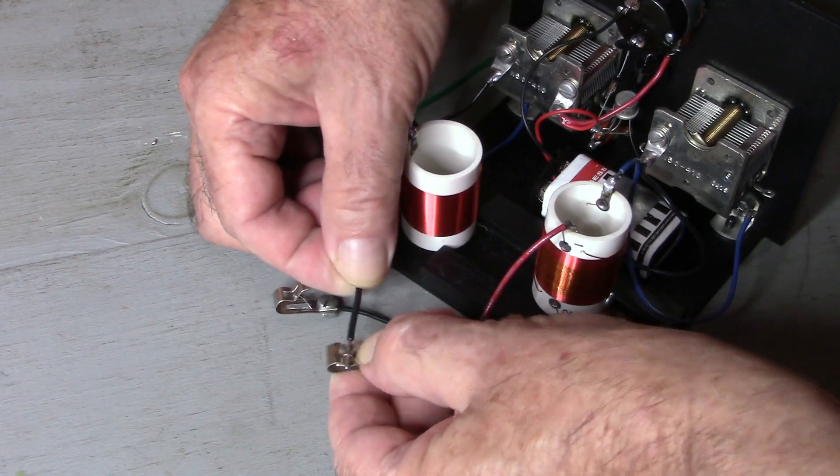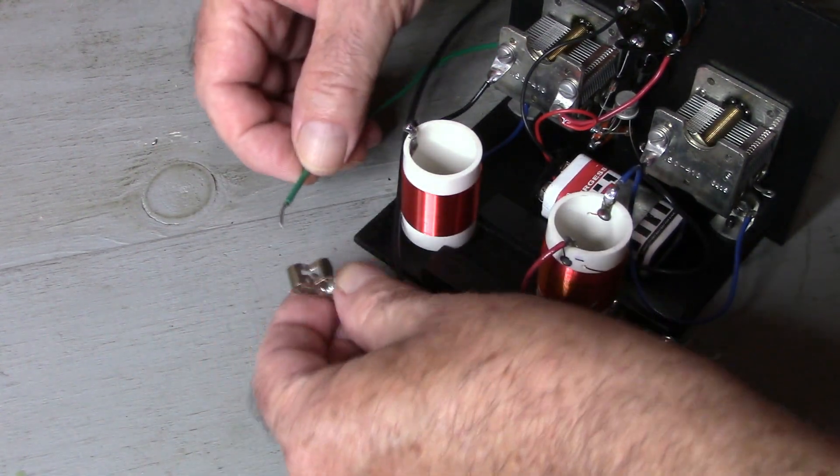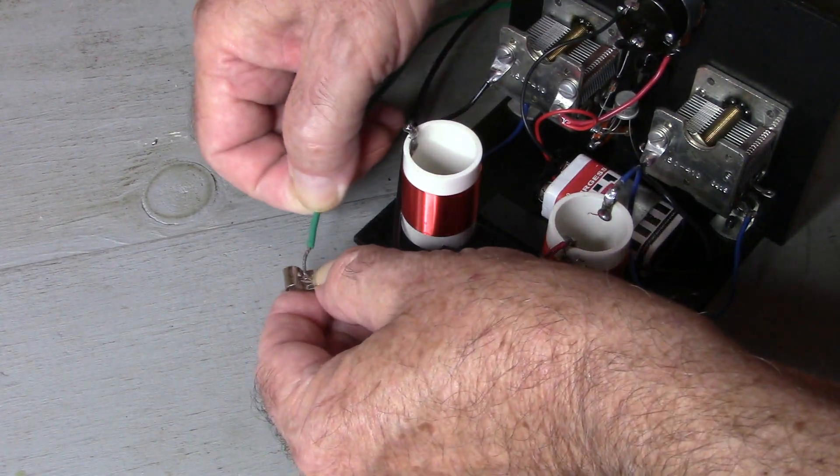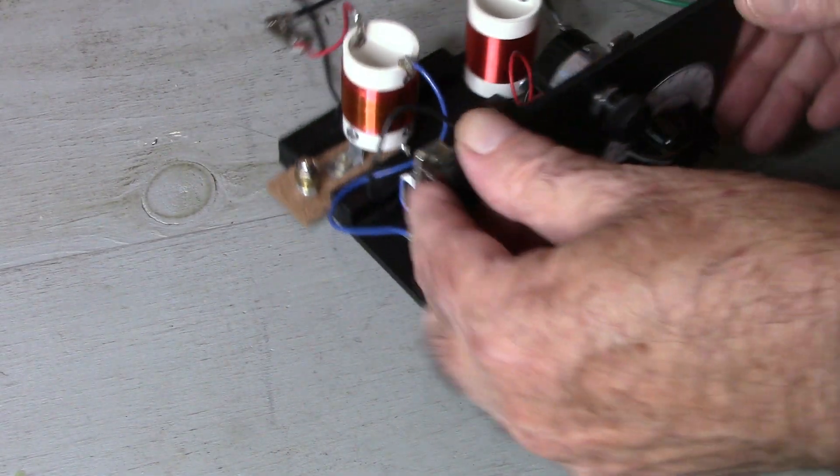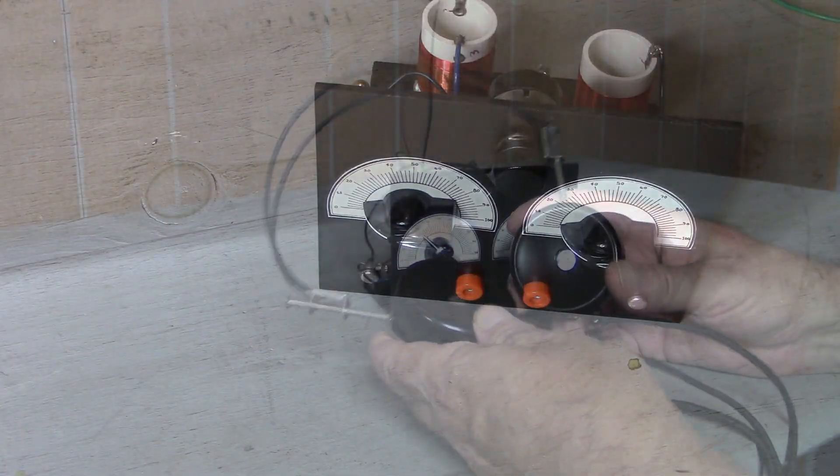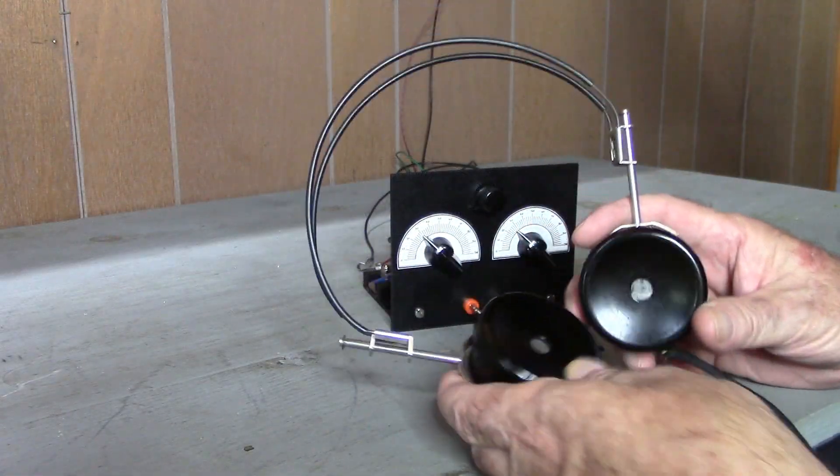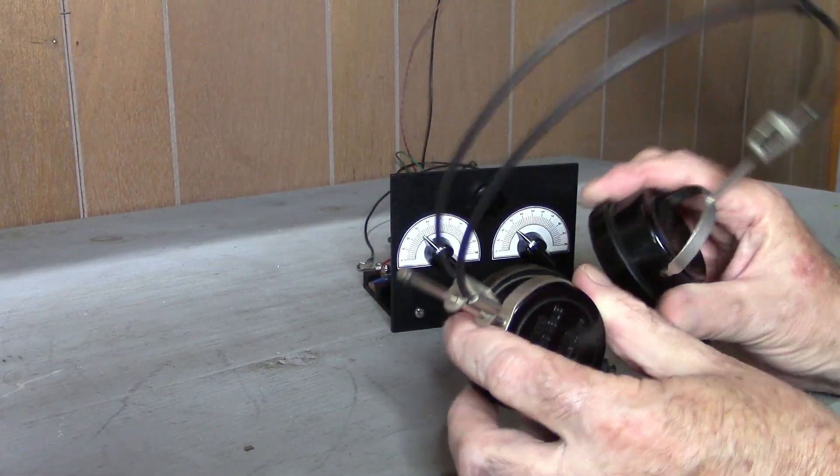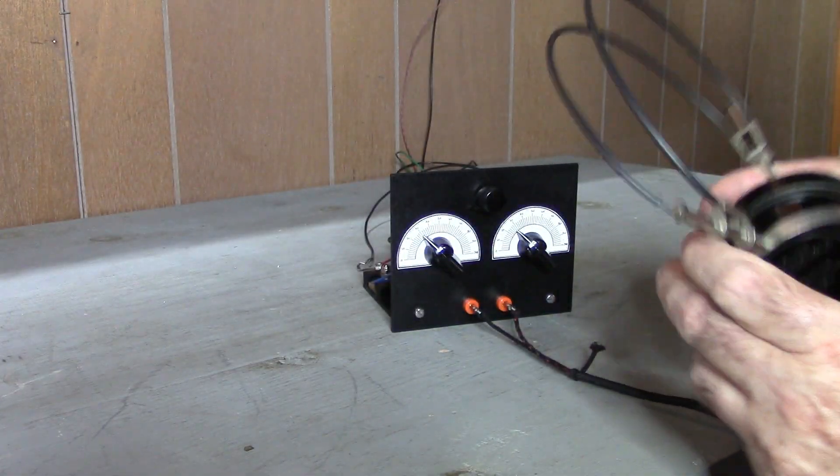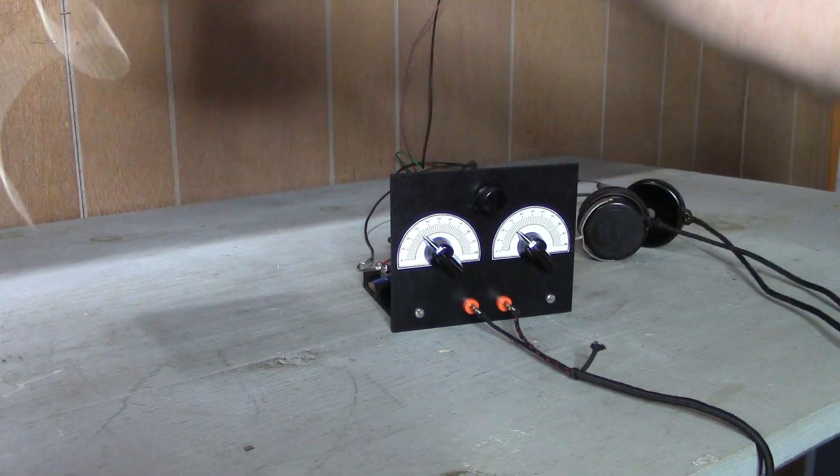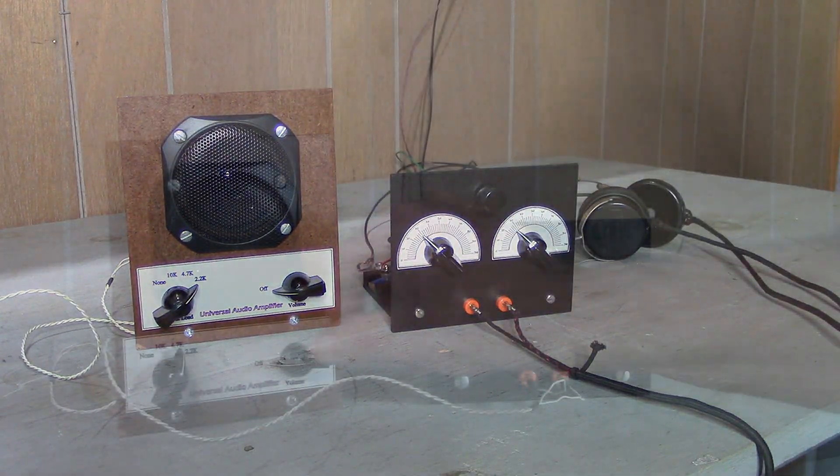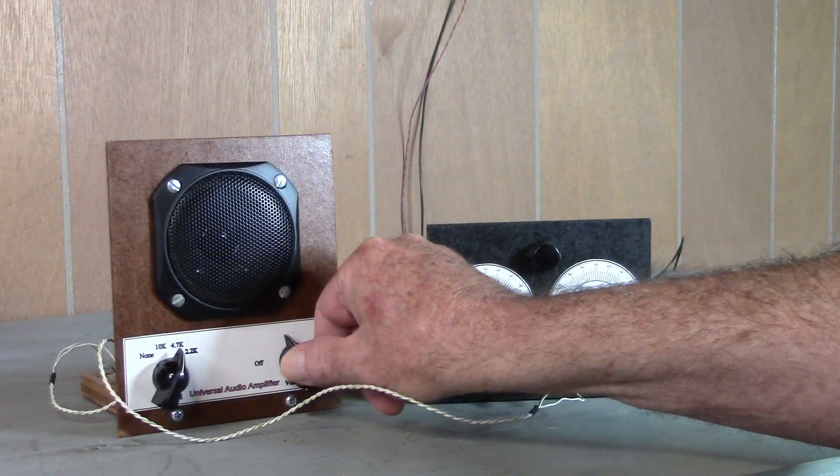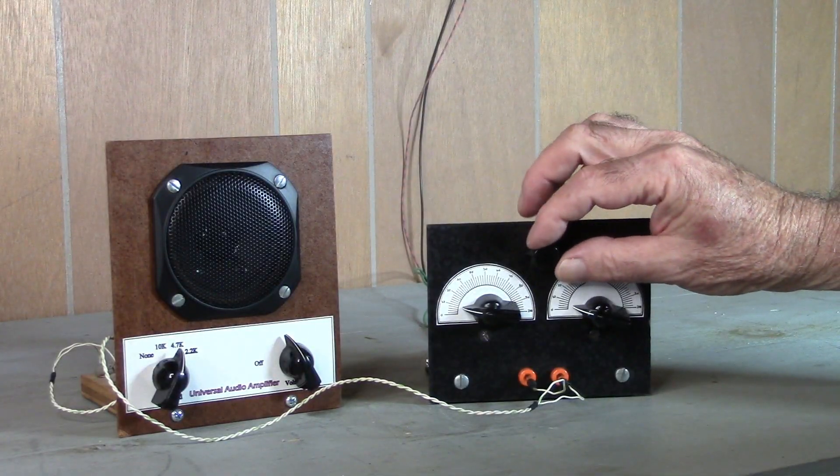We're connecting the long wire antenna and the earth ground. The antenna is a piece of wire that goes out the window to a tree and it's about 60 feet long. This radio requires a set of high impedance headphones to make it work, but you're not going to be able to hear them in the video. So we'll use this amplified speaker. Amplifier on. Radio on.